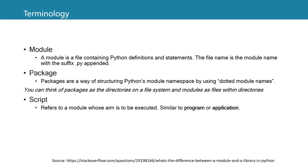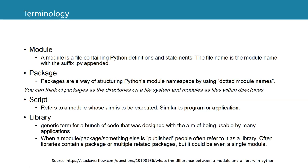Then we have scripts — basically a bunch of code lines that you execute — which we can also call a program or an application. And then there's a library, which is a more generic term for a bunch of code designed to be usable and reused by many applications. When we publish a module, a package, or something else, we refer to it as a library. Often these libraries contain a package or multiple related packages, but it could also be a single module.